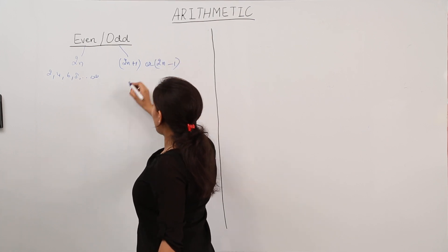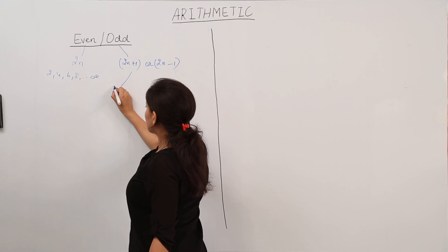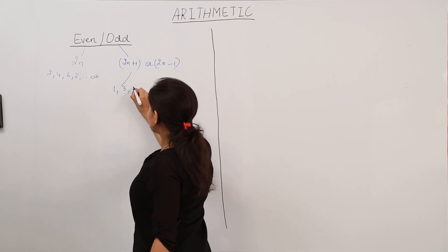So the examples of odd numbers are 1, 3, 5, 7, up to infinity.